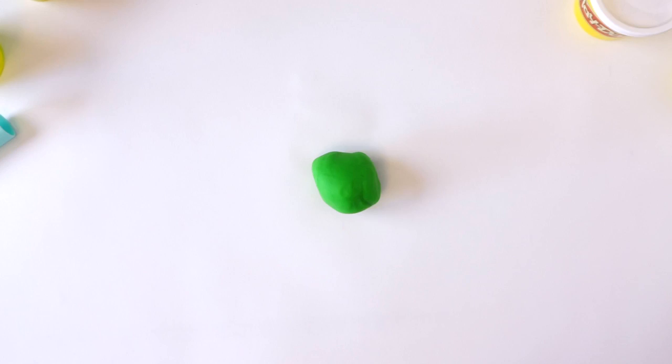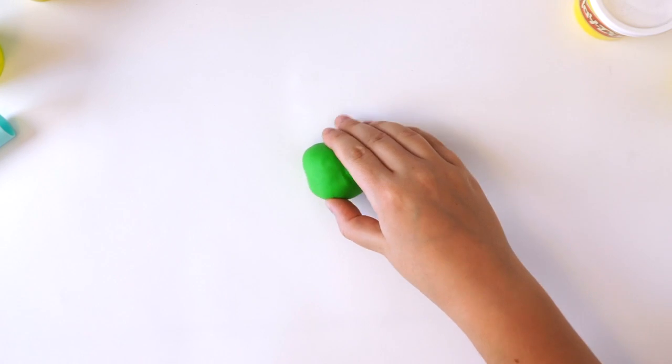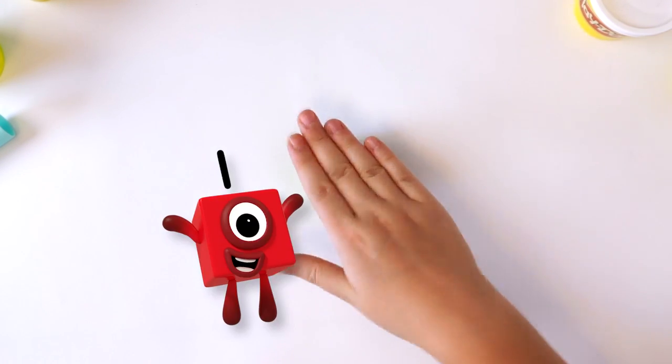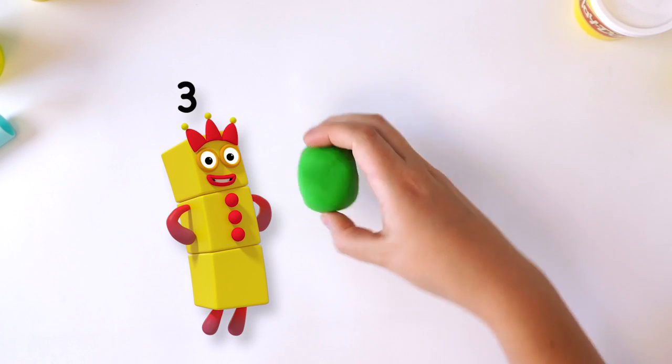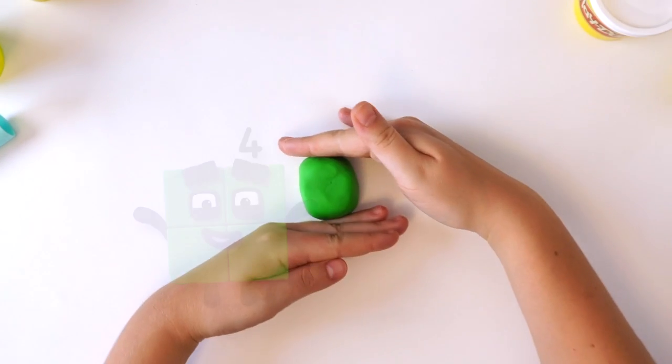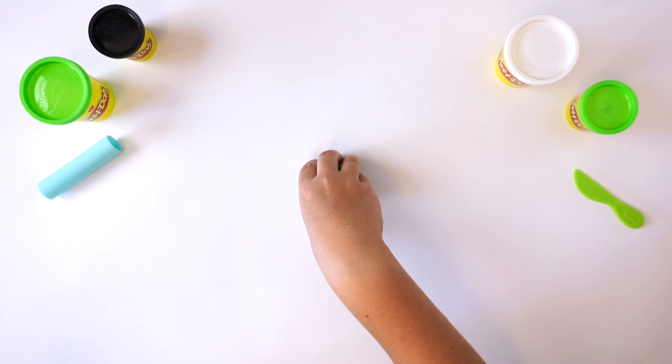Then, push the Play-Doh compound down against the surface you're working on to make four flat sides. One, two, three, four. Flatten the top and the bottom to make a cube with six sides.